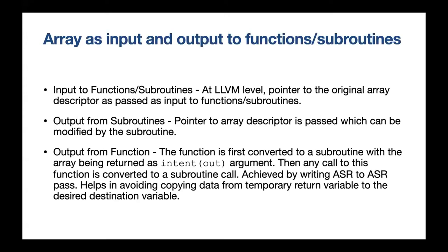Fortran allows arrays as input and output to functions and subroutines. When providing arrays as inputs, we just pass a pointer to the descriptor structure. Similarly for output from subroutines, we pass a pointer to the descriptor and the subroutine operates on it directly, so you don't have to copy a whole lot of data from one point to the other.